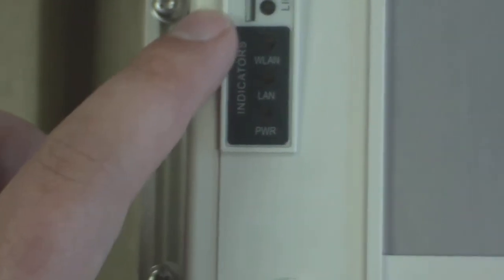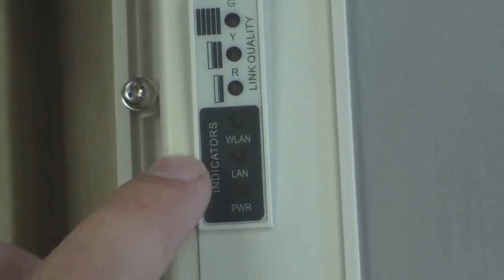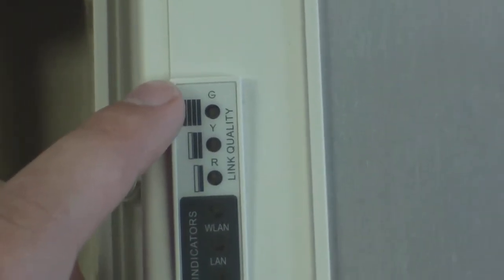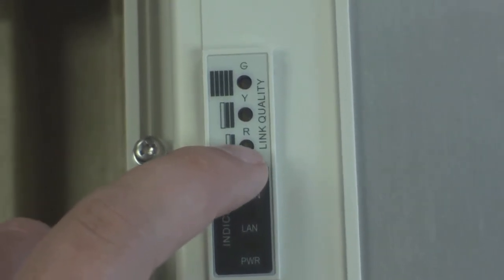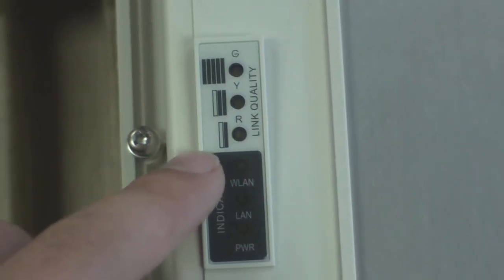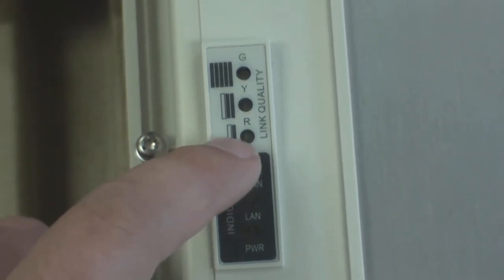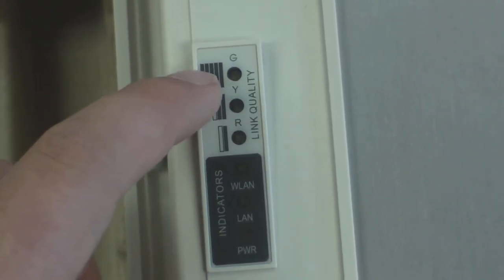Right here are the indicators for wireless LAN activity, LAN activity, and power. This is the link quality indicator if you're using it in bridge mode. It's got a red, yellow, and green LED indicating one level of signal strength. Red is poor, yellow is acceptable, green is good.